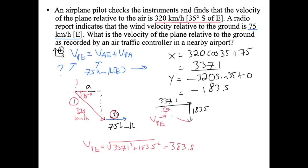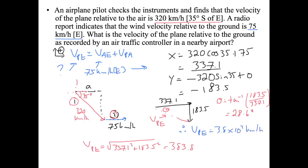v_pe equals the square root of 337.1 squared plus 183.5 squared, which equals 383.8 km/h. Theta equals inverse tan of 183.5 divided by 337.1, which equals 28.6 degrees. With two significant figures, v_pe equals 3.8 times 10 to the 2 km/h, east 29 degrees south.